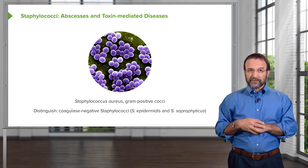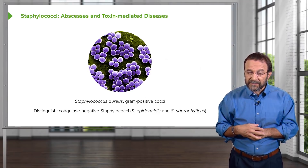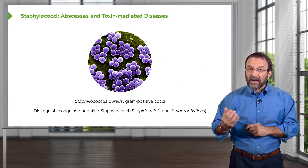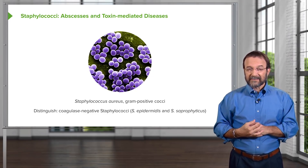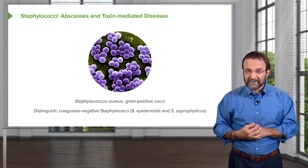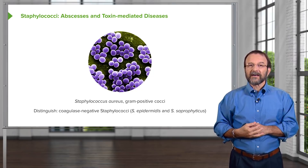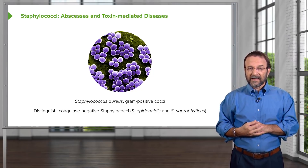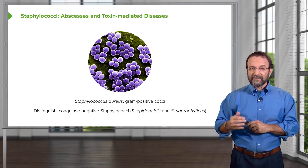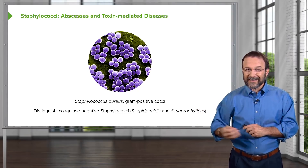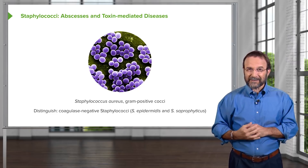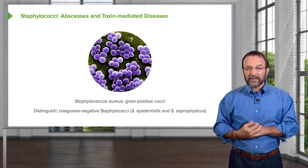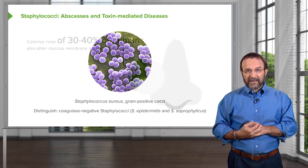Let's dive into Staphylococci first. These are causative agents of abscesses and toxin-mediated diseases. Here we have a photograph of Staphylococcus aureus. These are gram-positive cocci, and they're often called grape-like clusters. Don't they look like grapes to you? Purplish. That's the morphological appearance of Staphylococci.